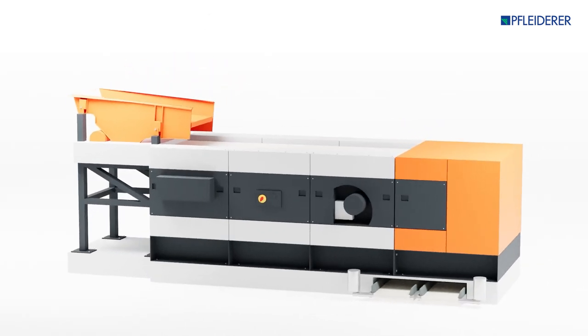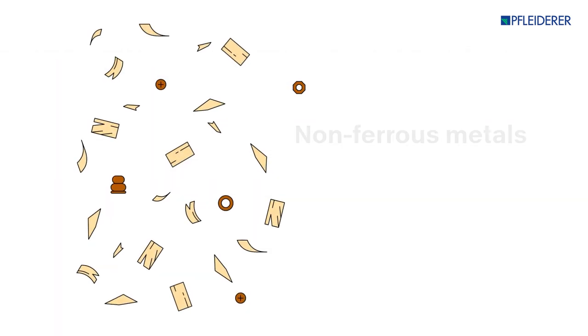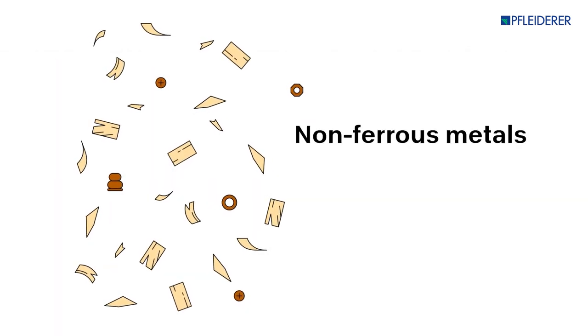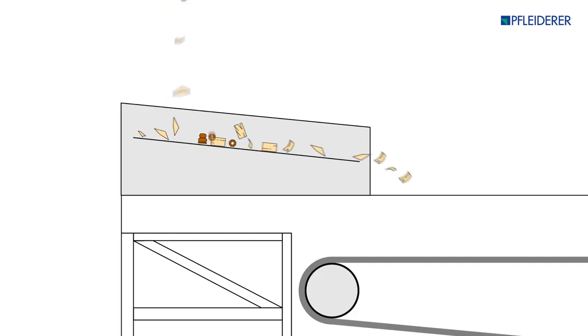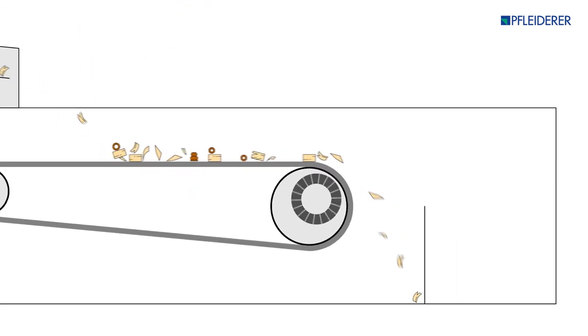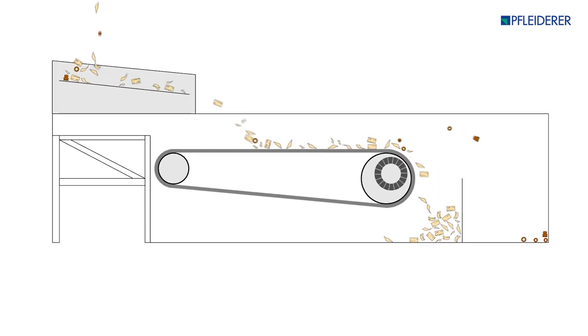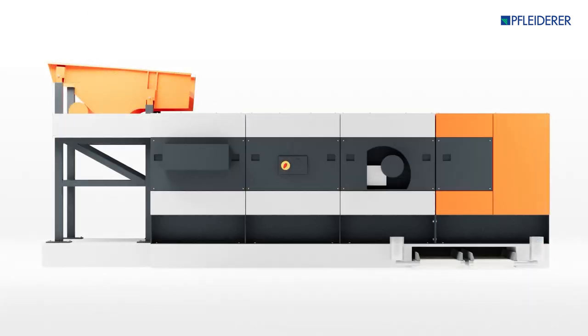In the next step, non-magnetic metals, so-called non-ferrous metals, are removed. This is achieved by running the material across an eddy current separator that creates an electromagnetic field that produces forces which repel the contaminants, thereby expelling them from the material flow.